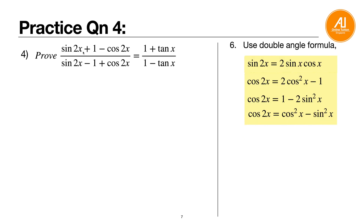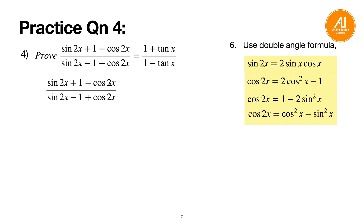Question four: prove (sine 2x plus 1 minus cosine 2x) over (sine 2x minus 1 plus cosine 2x) equals (1 plus tangent x) over (1 minus tangent x). There are many double angles, so use the double angle formulas. Sine 2x has only one option: 2 sine x cosine x. For cosine 2x, you have three options — choose 1 minus 2 sine squared x because the plus 1 and minus 1 in the numerator will cancel each other.